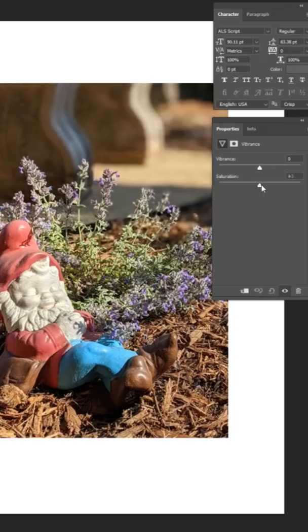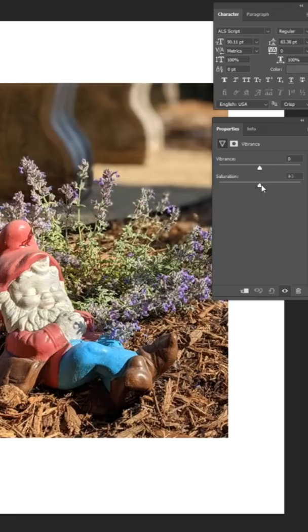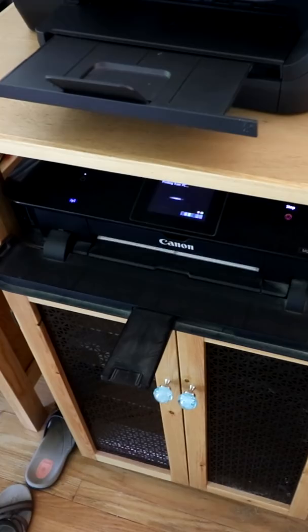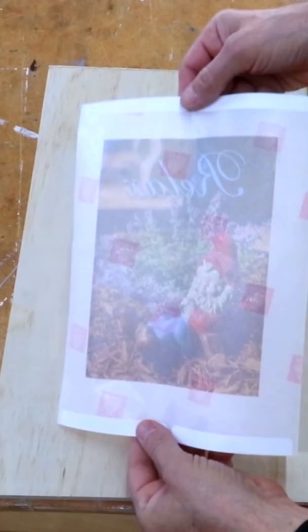Boost the saturation on your image. If there's any text on your image you're gonna need to reverse the image. Print your image using the photo settings so that it applies more ink. The ink just kind of sits on the slick backing so just be careful not to touch it and smudge it.